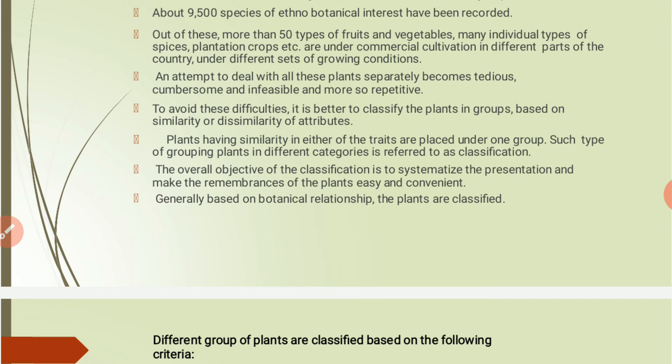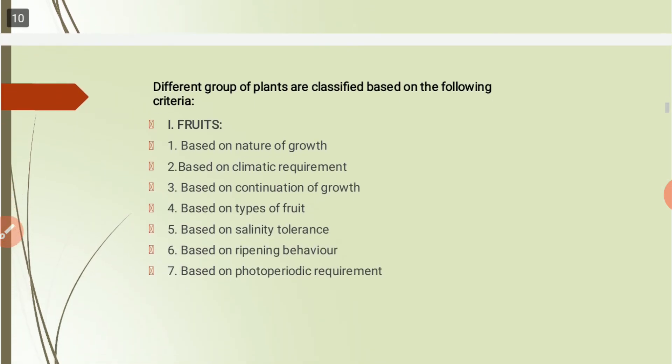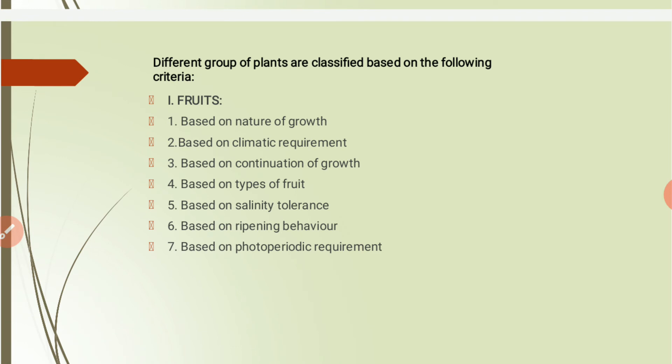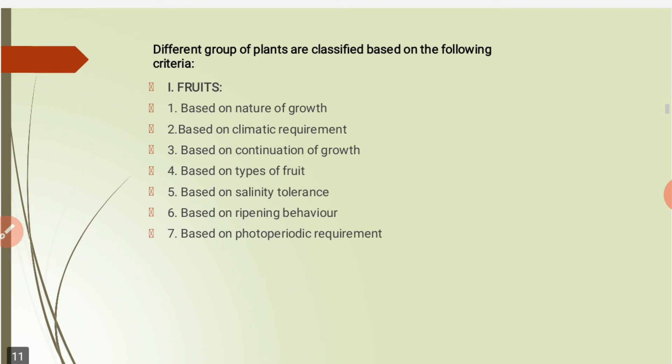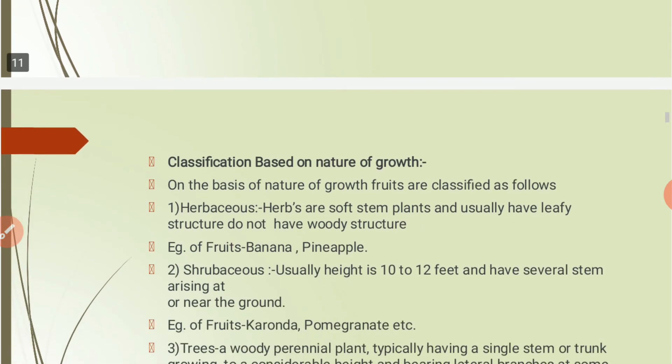Plants are generally classified based on botanical relationships. The criteria for classification of fruits include: nature of growth, climatic requirement, continuation of growth, type of fruit, salinity tolerance, ripening behavior, and photoperiodic requirements.